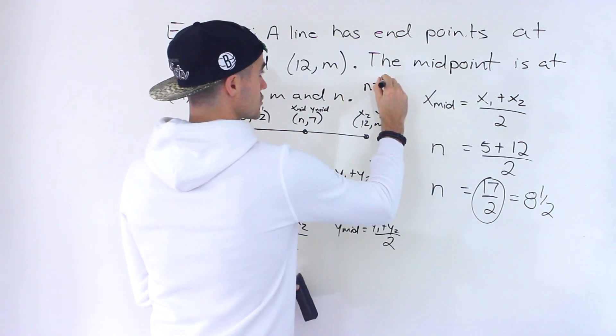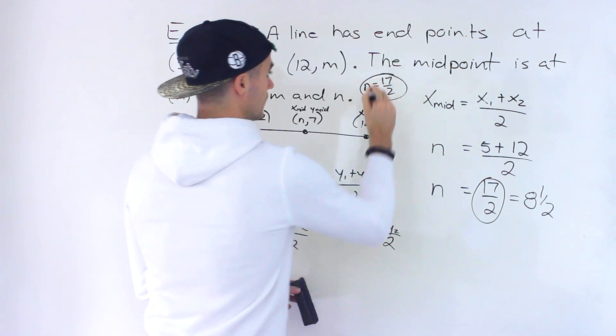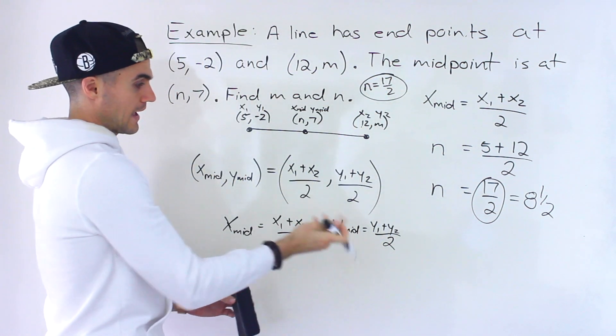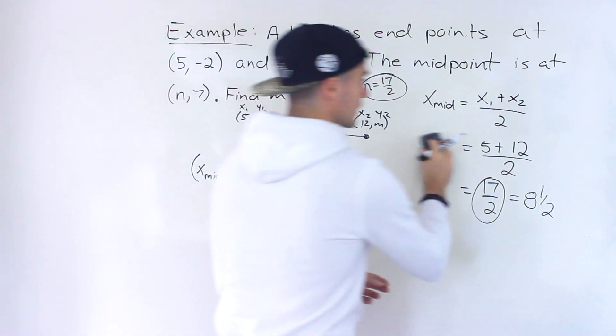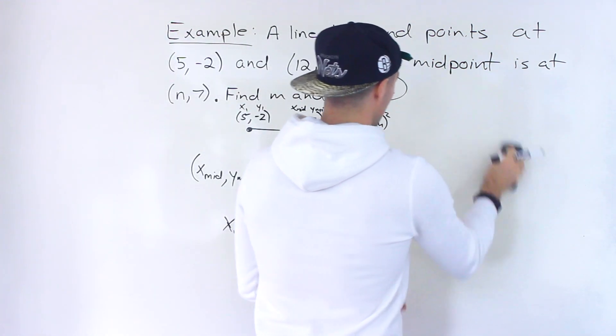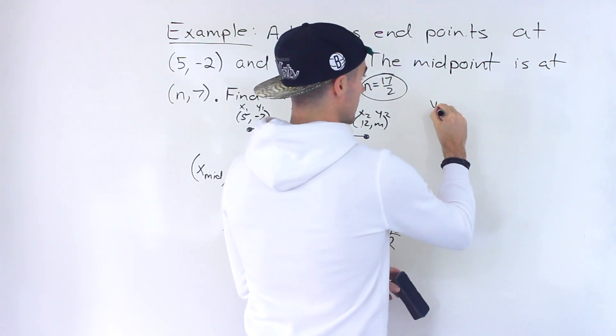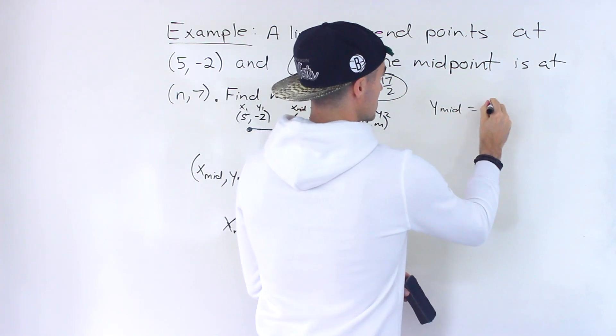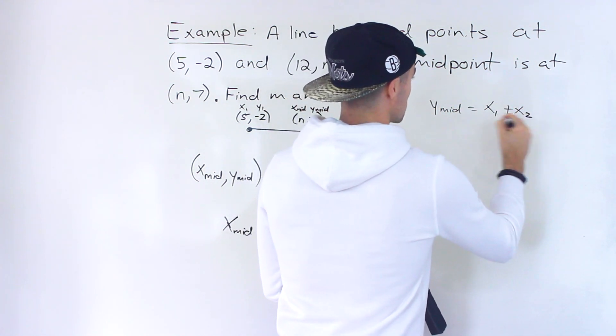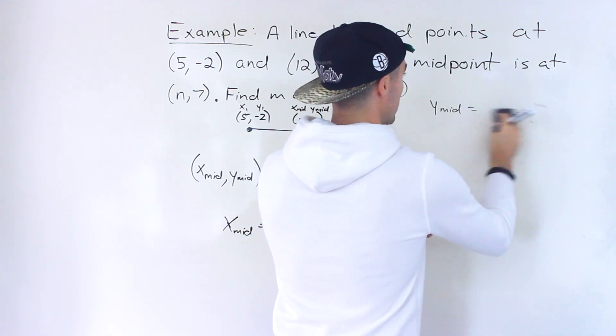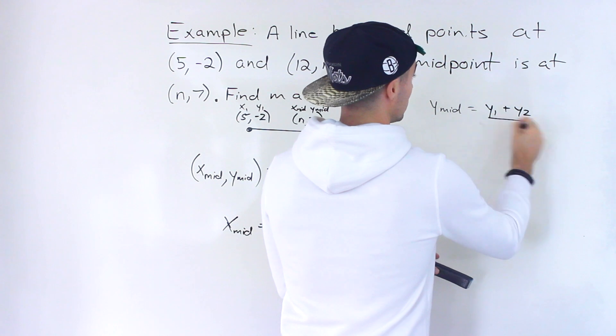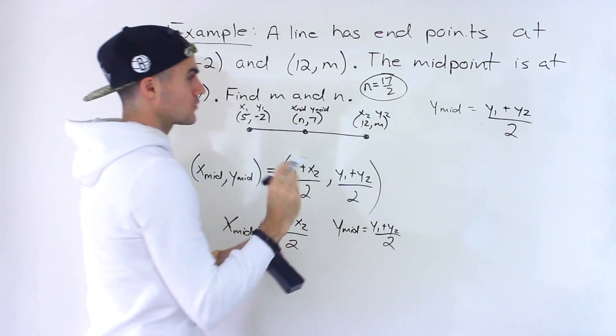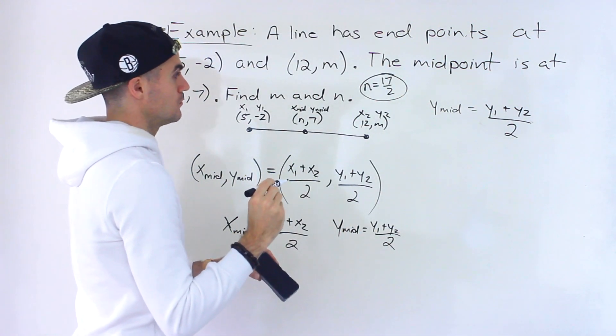So we're done half of the question. And then notice to solve for the m value, we're going to have to use the y value of the midpoint formula. Let's rewrite that formula. This one's going to take a little bit more math, because we're actually solving for the y value of an endpoint, not of the midpoint. So we're going to have to rearrange this a little bit, but it's not going to be too bad.